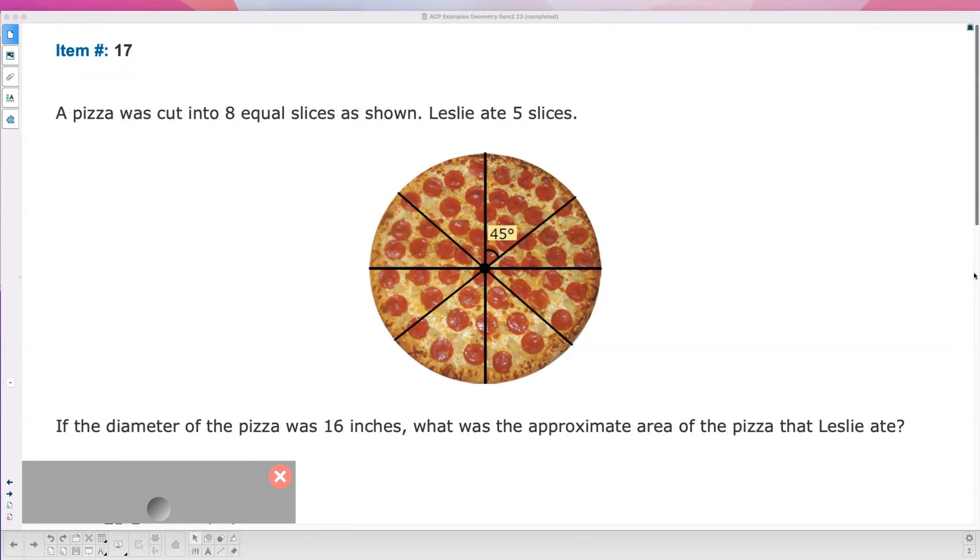So what is the formula? If you look at area of a circle, what's the formula for area of a circle? Pi r squared. Now that's if you're looking for the whole circle. Are we looking for the whole circle? No.